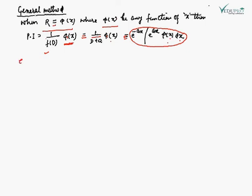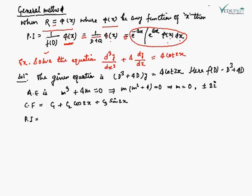We are taking an example here. Solve the equation d³y/dx³ + 4 dy/dx = 4 cot 2x, where phi(x) is cot 2x. The given equation is the third derivative plus 4 times d times y equals 4 cot 2x. Here f(d) is d³ + 4d.